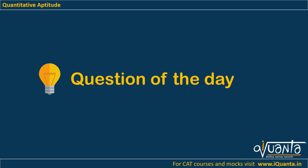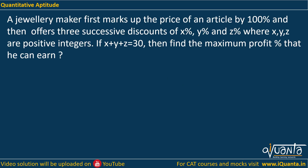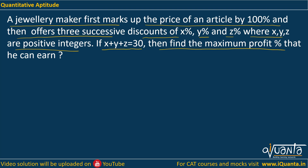Hello everyone. Let's try to solve a question based upon profit and loss. The question is: a jewelry maker first marks up the price of an article by 100% and then offers three successive discounts of x%, y%, and z%, where x, y, z are positive integers. If x plus y plus z is 30, then find the maximum profit that he can earn. We have to work upon maximizing the profit.